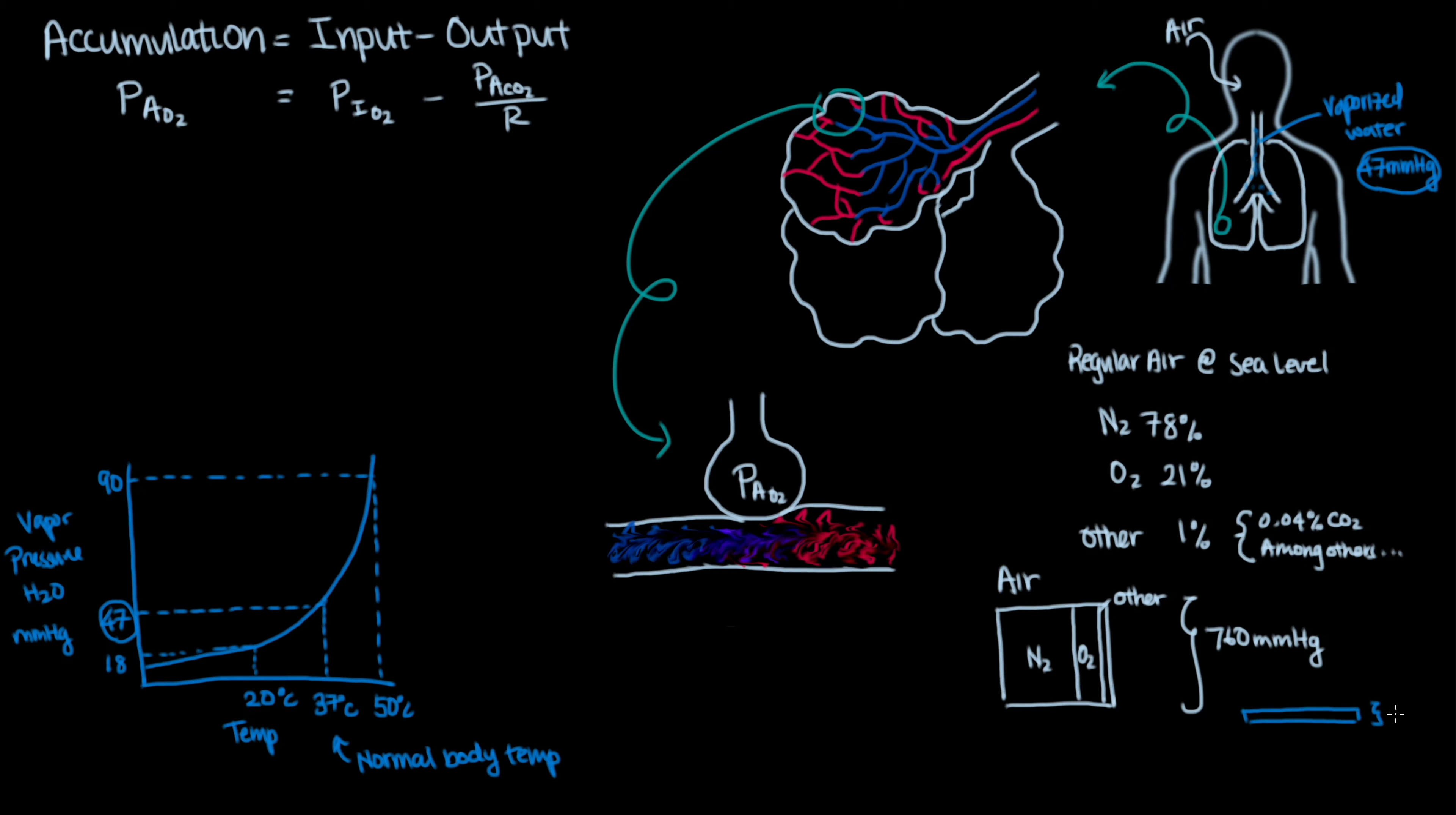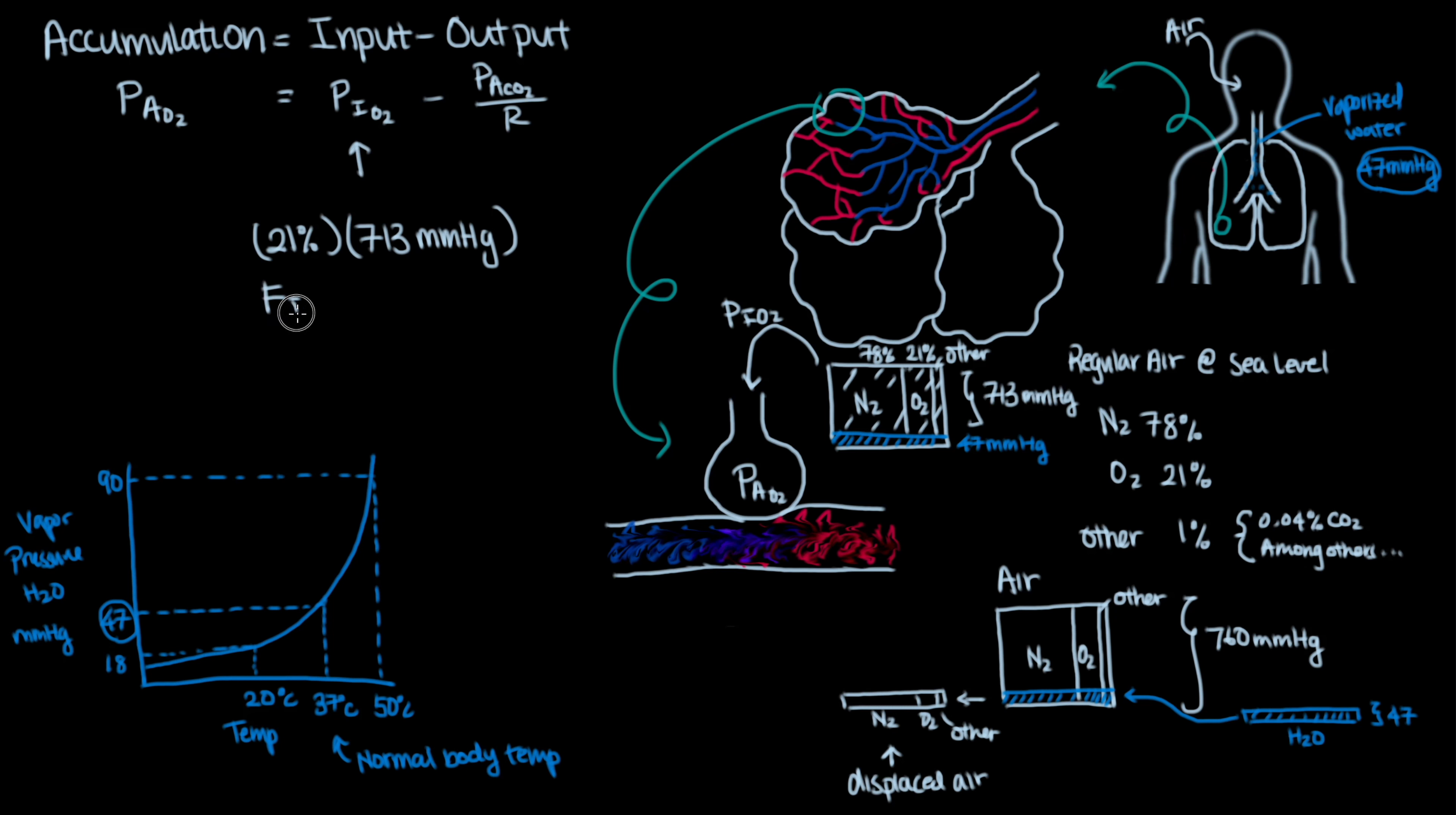What happens when the unit of air meets this water vapor is the water vapor displaces 47 mmHg worth of gas from the original unit of air as it makes its way down the alveolus. This accounts for about 6% of the original unit of air. This means that the remaining 713 mmHg still has the same proportions of gas distribution as before, but some of the nitrogen, oxygen, and other stuff didn't make it in because the water vapor came in and replaced it. So in the end, the oxygen that makes it to the alveolus is 21% of the remaining 713 mmHg.